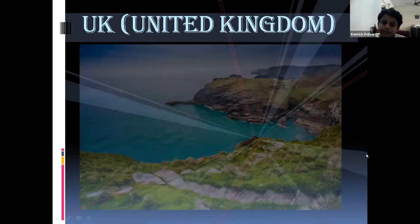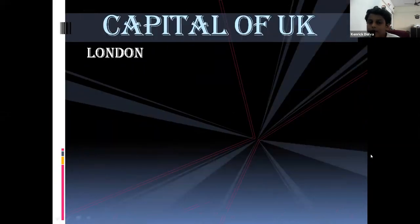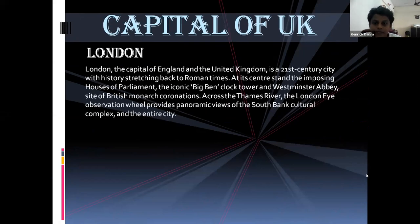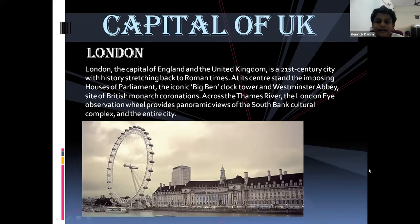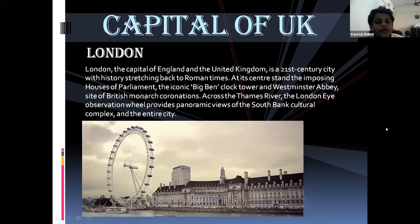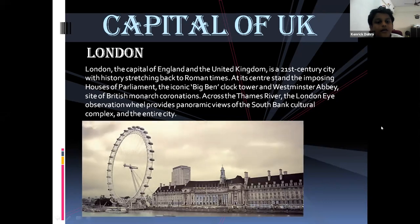Good afternoon, teachers and my dear friends. Today I am here to share about the UK — that is the United Kingdom. The capital of the UK is London. London, the capital of England and the United Kingdom, is a 21st century city with history stretching back to Roman times. At its centre stand the imposing Houses of Parliament, the iconic Big Ben clock tower, and Westminster Abbey, site of British monarch coronations. Across the Thames River, the London Eye observation wheel provides panoramic views of the South Bank cultural complex and the entire city.